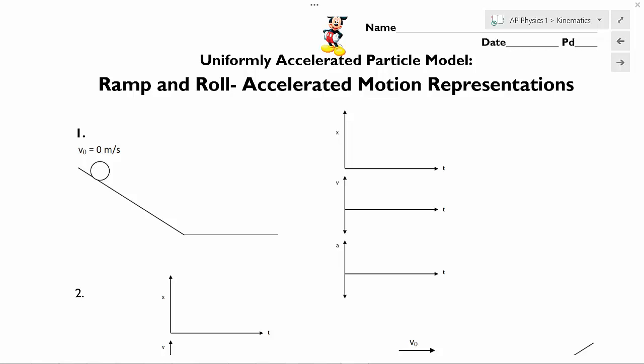The first thing I want to point out is that I want you to assume that for all of these problems, there is negligible friction. So these are frictionless ramp and rolls.